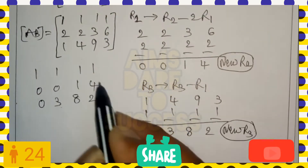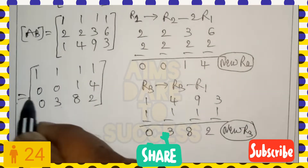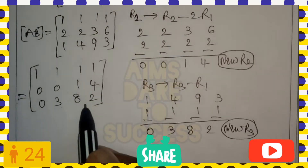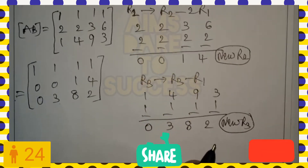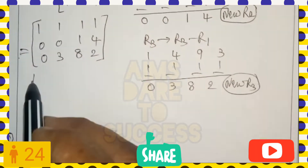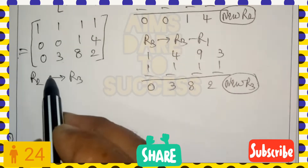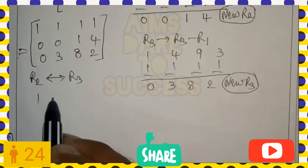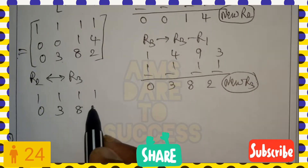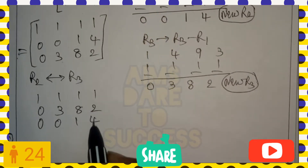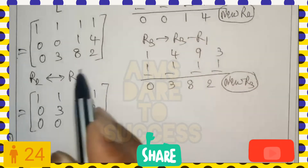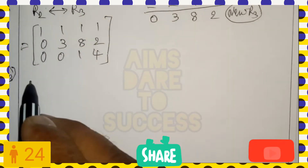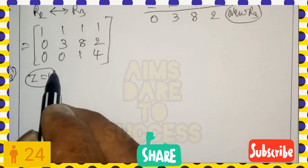To achieve the L-symbol pattern, we need a non-zero value in the second row, second element. Since R2 currently has zero there, we interchange R2 and R3. After swapping: R1 = [1, 1, 1, 1], R2 = [0, 3, 8, 2], R3 = [0, 0, 1, 4]. Now we have the required L-symbol pattern with ones on the leading diagonal.